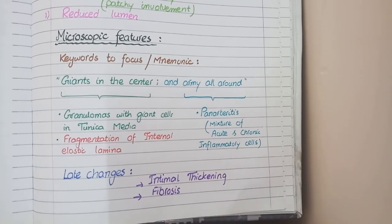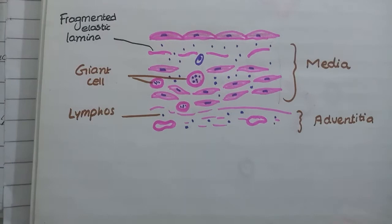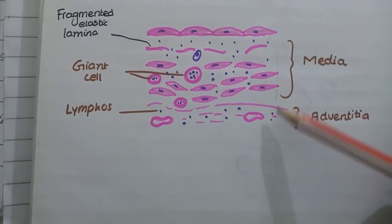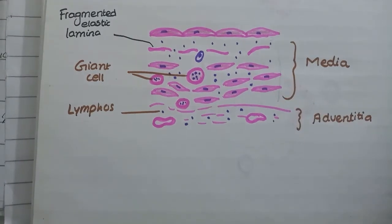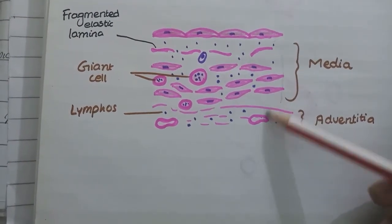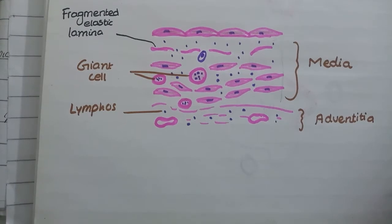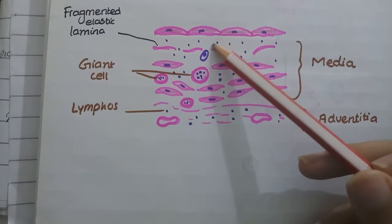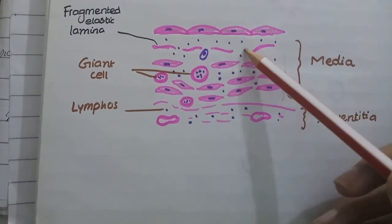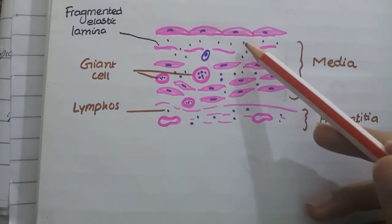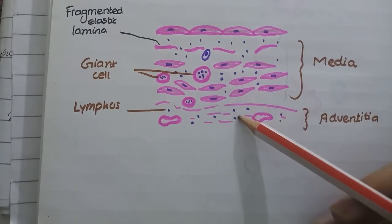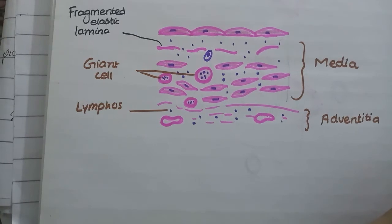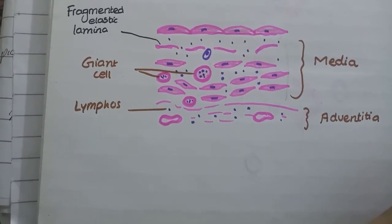Here is a diagram for giant cell arteritis. The endothelial cells are in the tunica intima, the middle layer with smooth muscle cells is the tunica media, and the last layer is the tunica adventitia. In the tunica media you can see giant cells and fragmentation of the internal elastic lamina. The blue-colored dots present all along the vessel wall represent white blood cells, and this feature is called panarthritis.